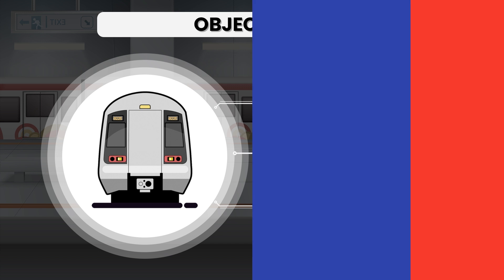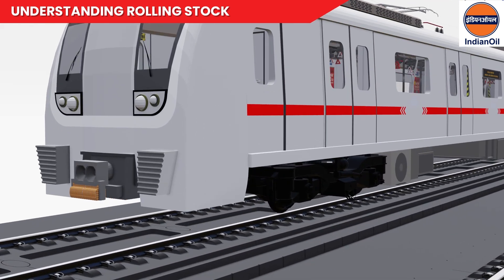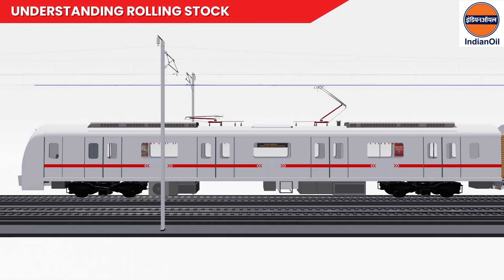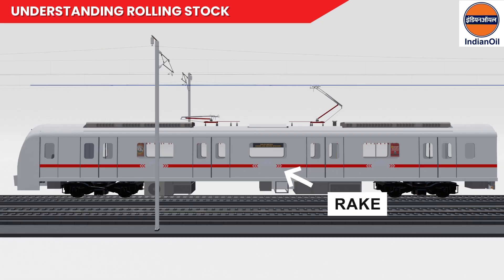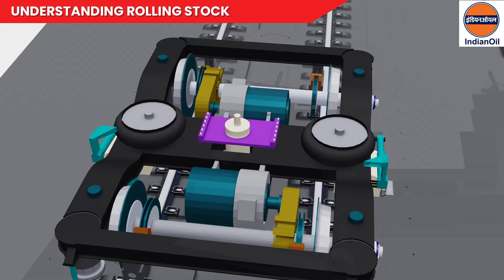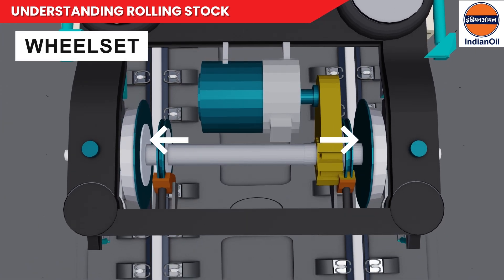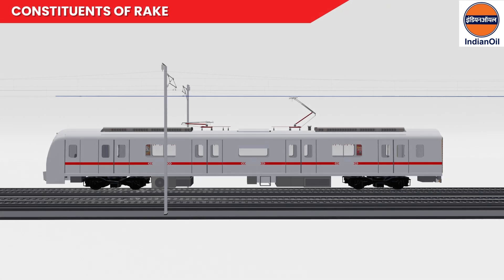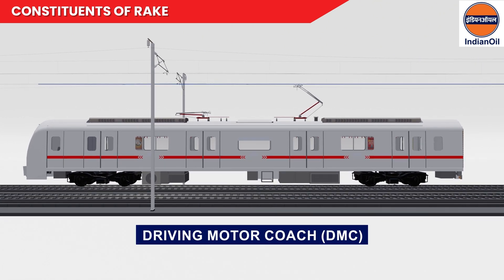Let us begin by understanding rolling stock. The entire metro rail with the main operating body and its wheelset comprises the rolling stock. Understanding the difference between a rake and a bogey: generally, the train itself is termed as a rake. A bogey is a chassis or framework that carries a wheelset attached to a vehicle — it is a modular sub-assembly of wheels and axles.